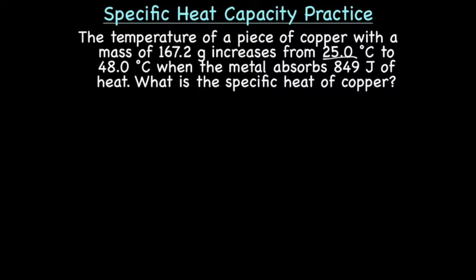Okay, let's try a specific heat capacity practice problem. The temperature of a piece of copper wire with a mass of 167.2 grams increases from 25 degrees Celsius to 48 degrees Celsius when the metal absorbs 849 joules of heat. What is the specific heat of copper?